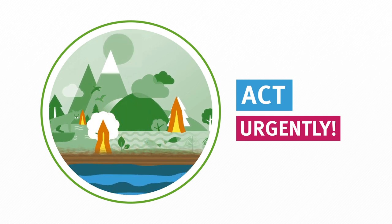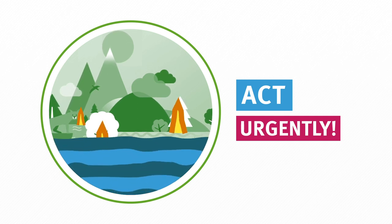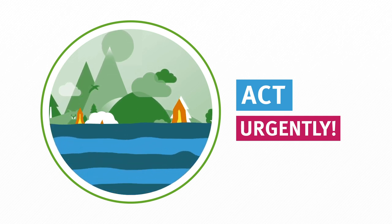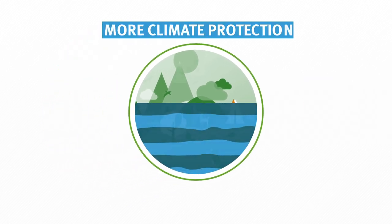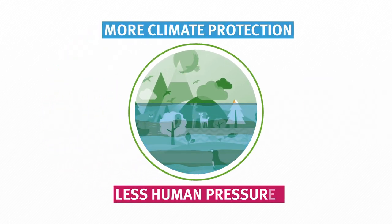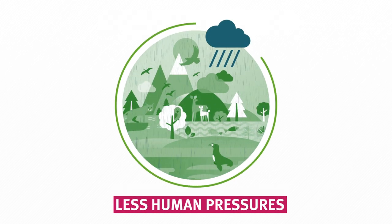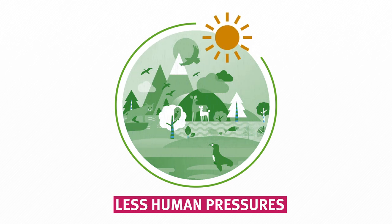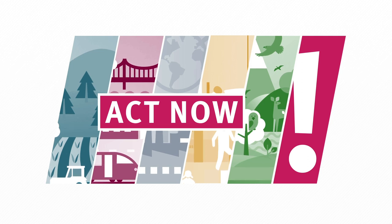At the same time, adaptations here are only possible to a limited extent, with difficulty or not at all. In addition to consistent climate protection, human pressures must therefore be reduced here urgently. With careful land use, for example, the soil will not be swept away during heavy rainfall — it can absorb the water and release it back to plants during dry spells. We must act now to protect the livelihoods of future generations.